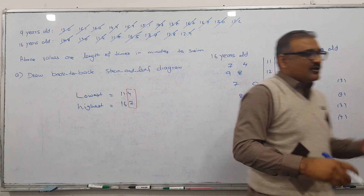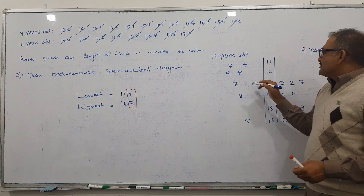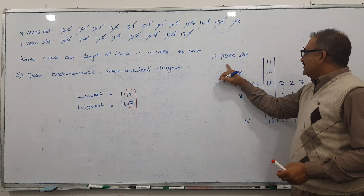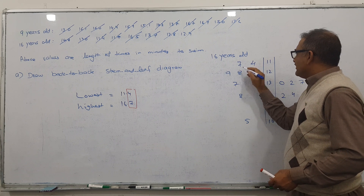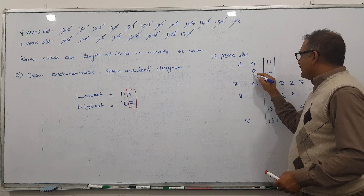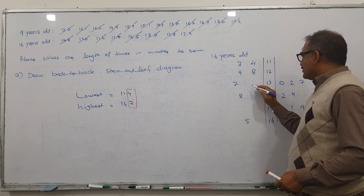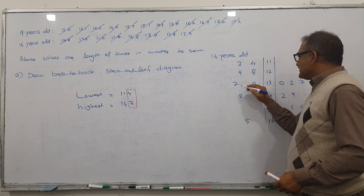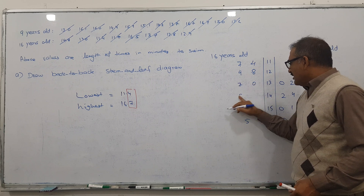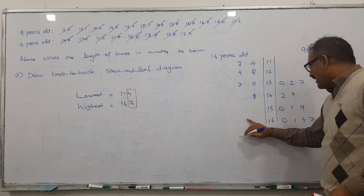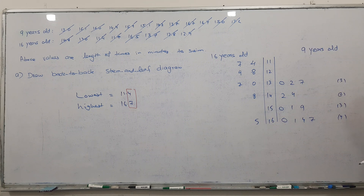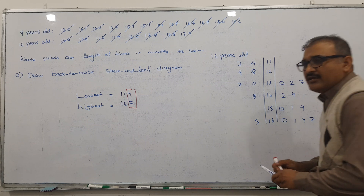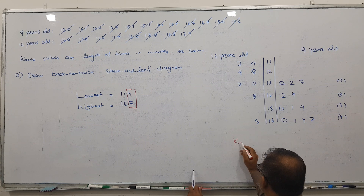Order, rub, and do again. So: 4 and 7 — 4 here, 7 here; 8 and 9 — 8 here, 9 here; 0 is okay; 7 comes here; 8 comes here; and 5 comes here. So this back-to-back leaf diagram is now complete.